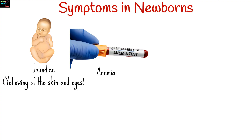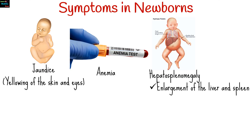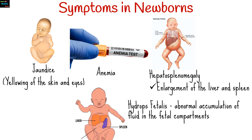Other symptoms include anemia, or low red blood cell count; hepatosplenomegaly, or enlargement of the liver and spleen due to increased work to filter out the damaged red blood cells; and hydrops fetalis, where there is abnormal accumulation of fluid in the fetal compartments.